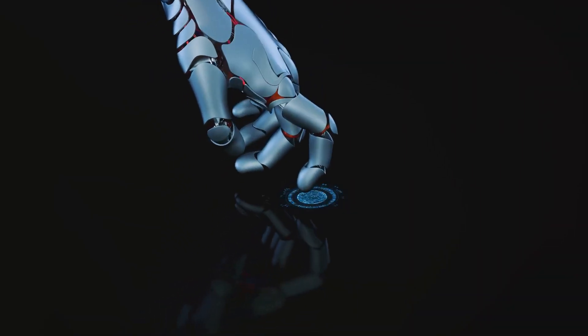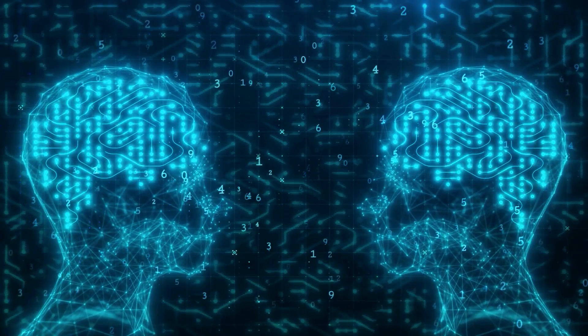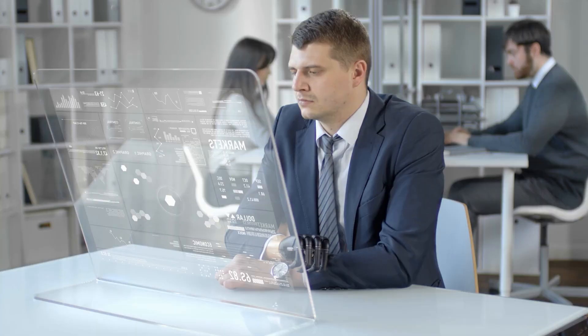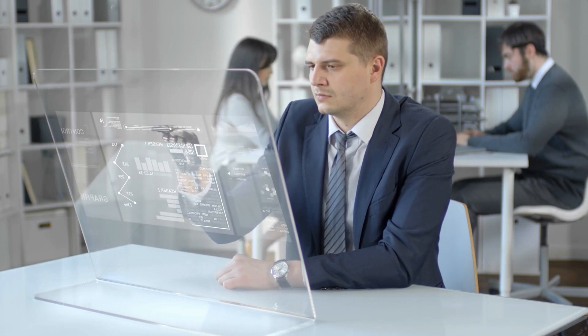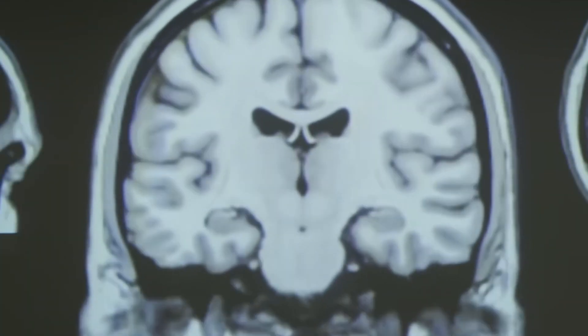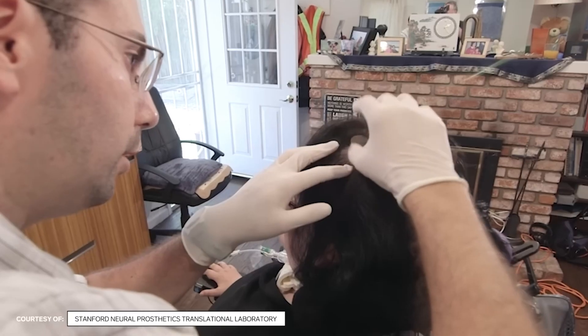The biosilicon hybrid robot demonstrates how merging biological elements with artificial systems can create machines that think and learn more like living creatures. This approach could lead to computers that are not only more powerful, but also more energy efficient, as the human brain consumes far less power than current supercomputers while performing complex cognitive tasks.